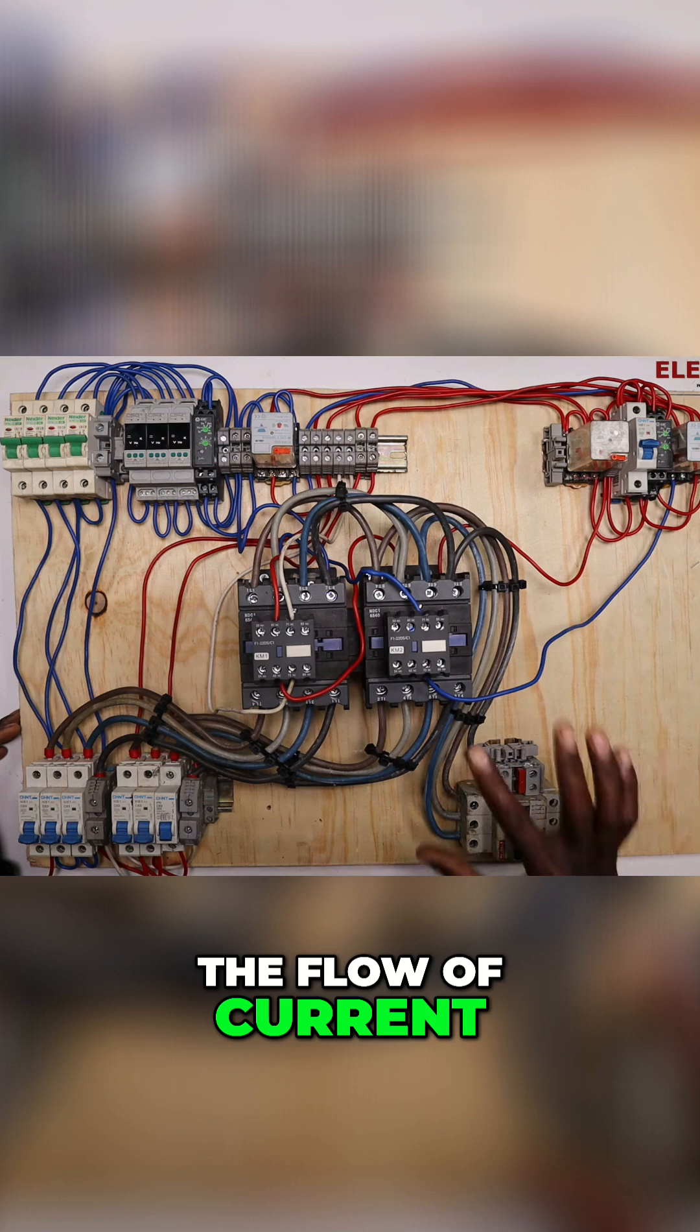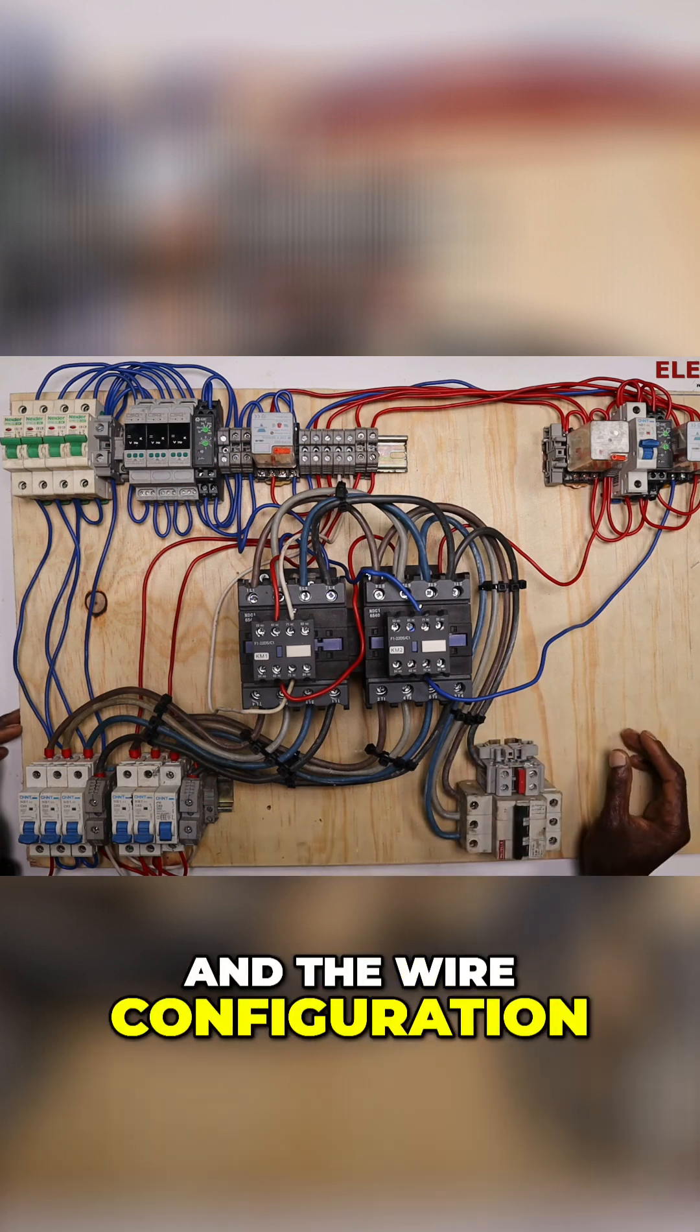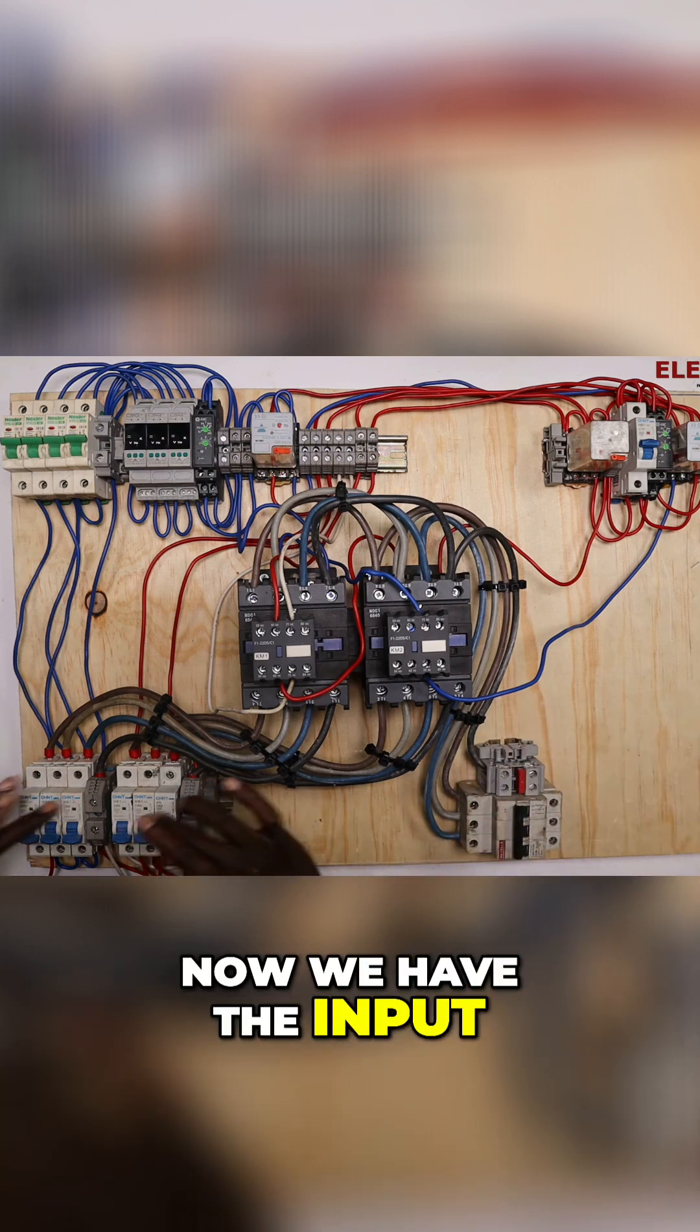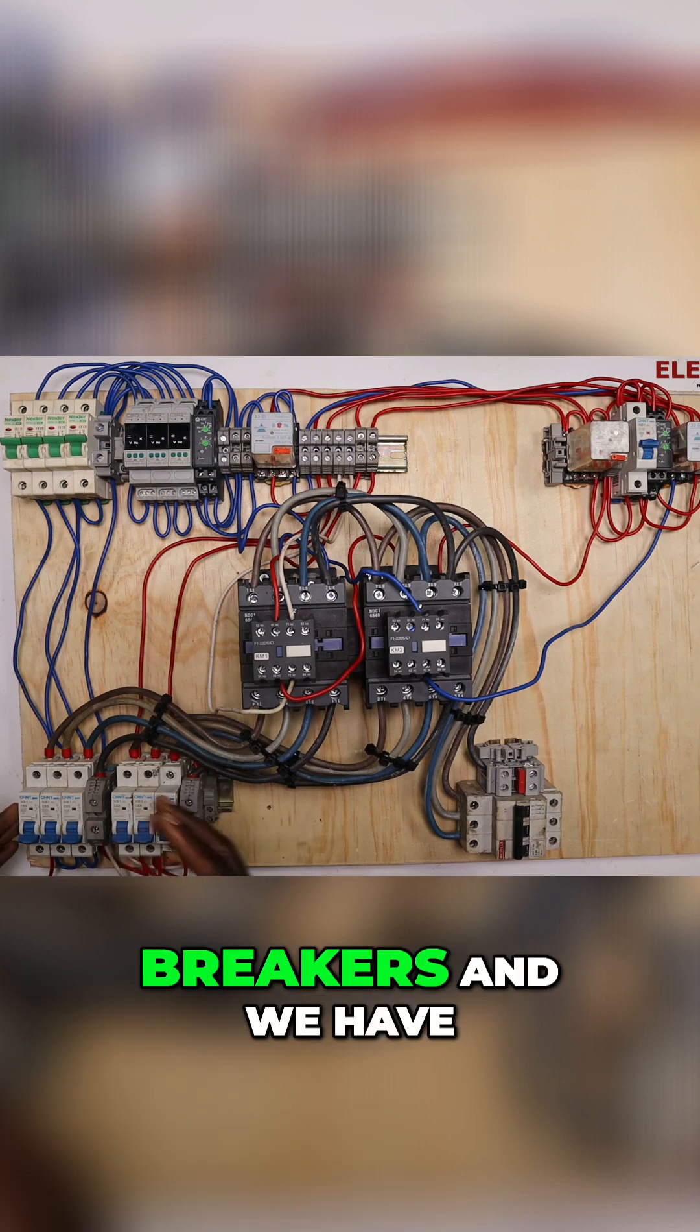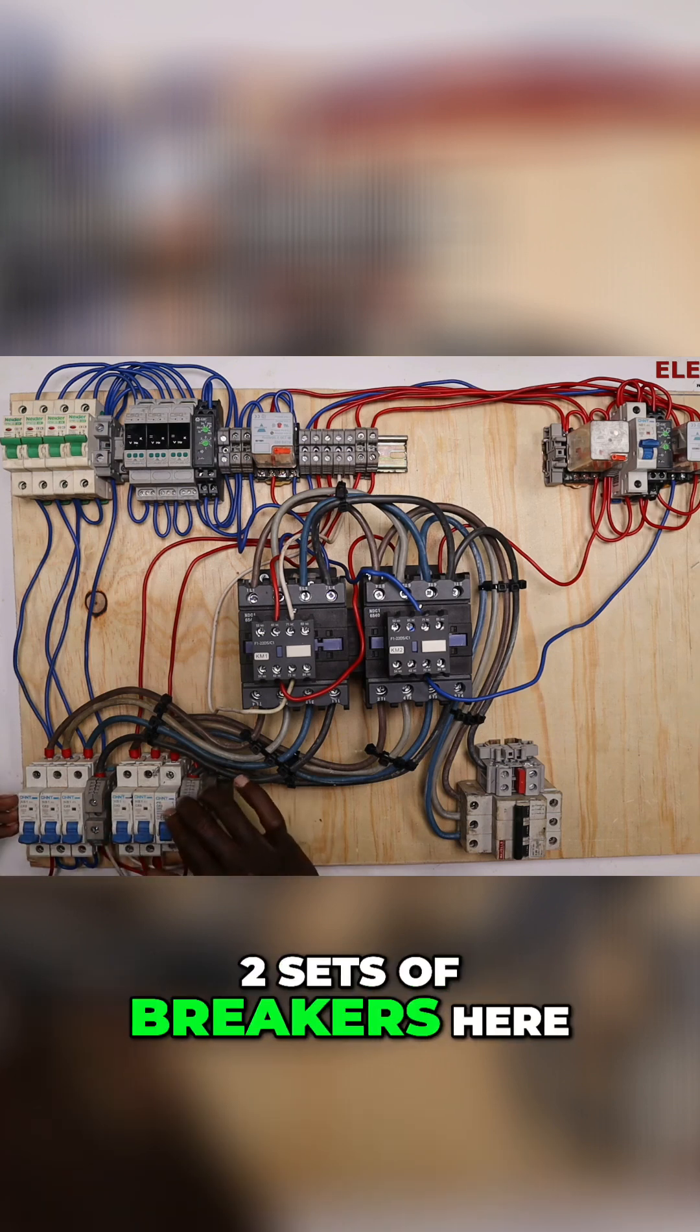Now the power circuit - let us look at the flow of current and the wire configuration. We have the input power here, so we have these breakers, and we have two sets of breakers here.